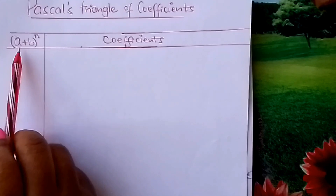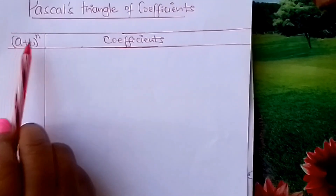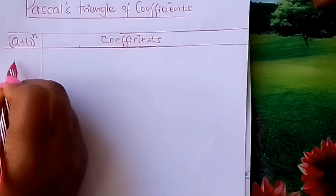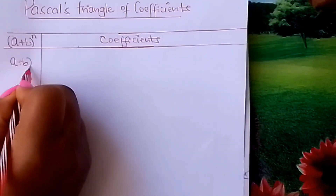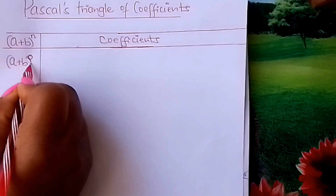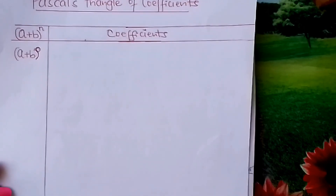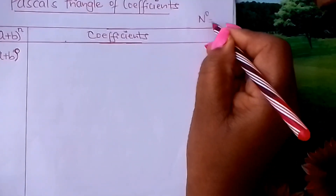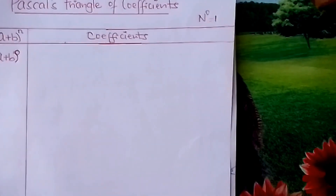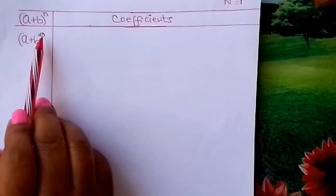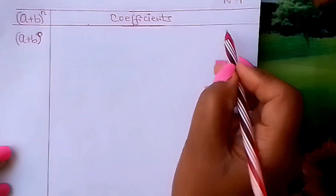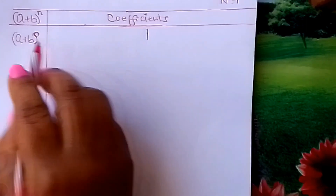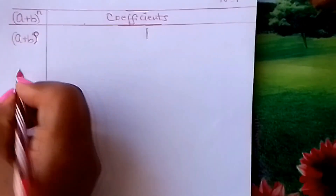So we come to this. Suppose we have a binomial like (a + b) raised to n — this is the general one. What will be the coefficients? If you have (a + b) raised to 0, what is the coefficient? We know that any number raised to 0 normally gives us 1. And therefore, even this bracket — this binomial raised to 0 — will be 1. Any number or any bracket raised to 0 is 1.